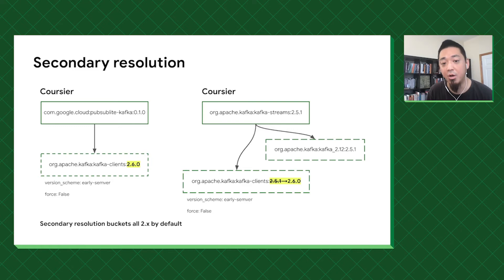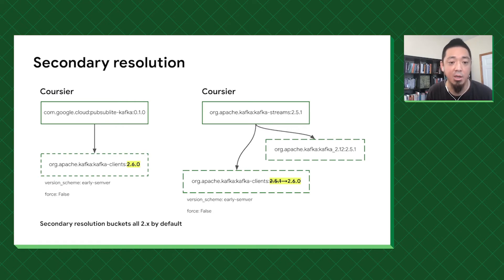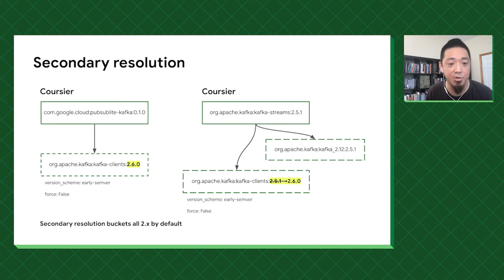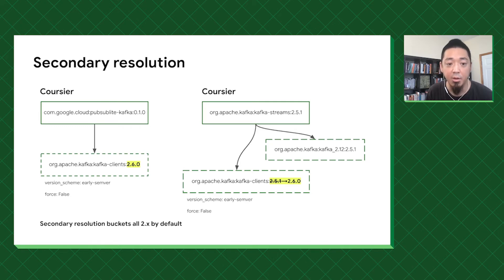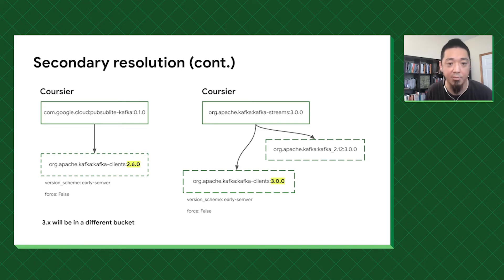To resolve these conflicts, we perform a secondary resolution where we bucket all the transitive dependencies into buckets per module. By default we assume early SemVer, which is a variant of semantic versioning, so all 2.x versions go into a single bucket — meaning 2.5.1 gets evicted in favor of 2.6.0. But because we're assuming semantic versioning, if it's 2.6 and then Kafka 3.0.0, these will be bucketed differently, and we'll now have a true multi-version situation.